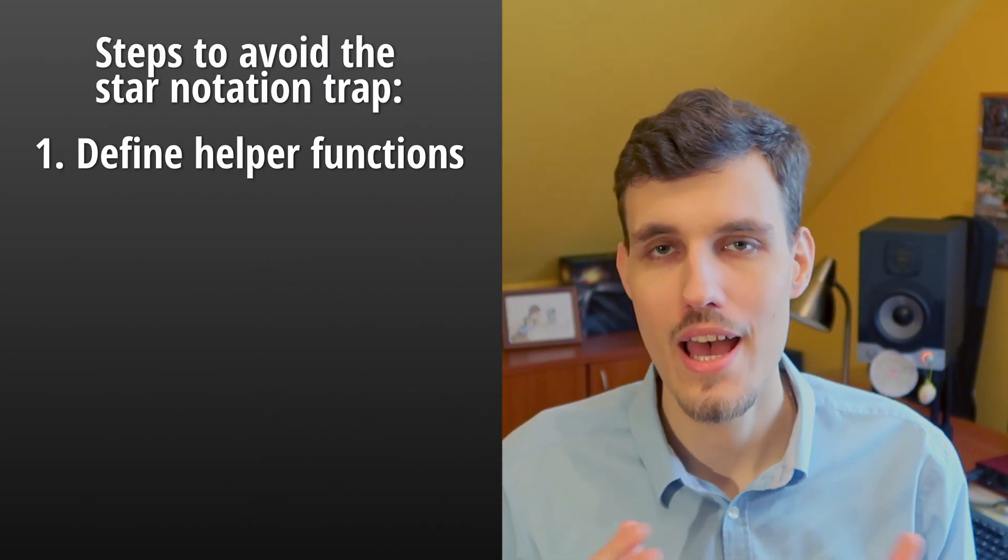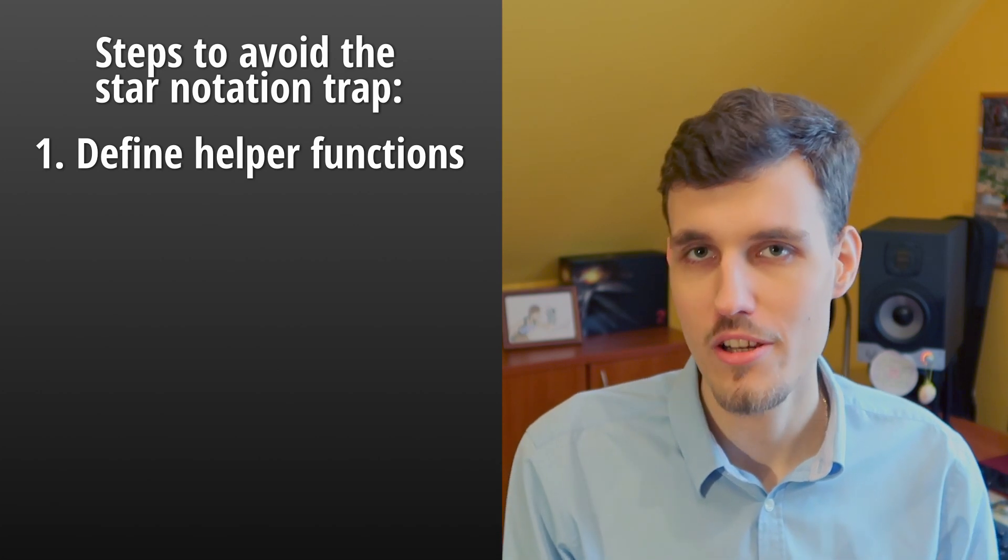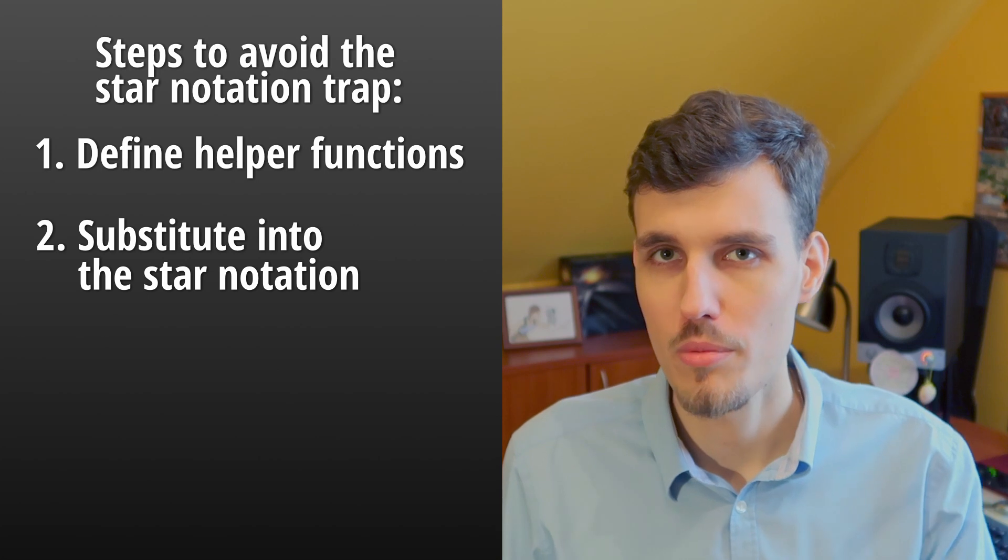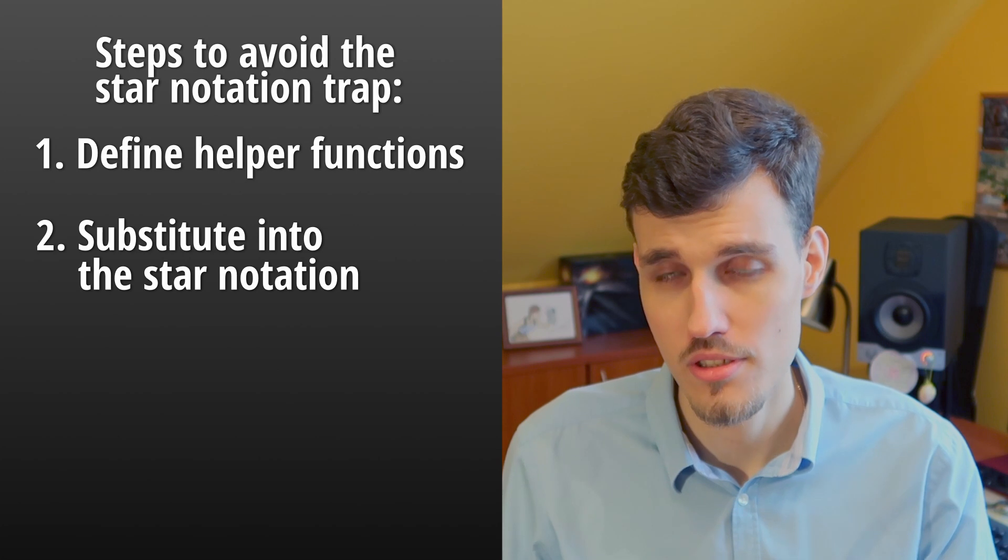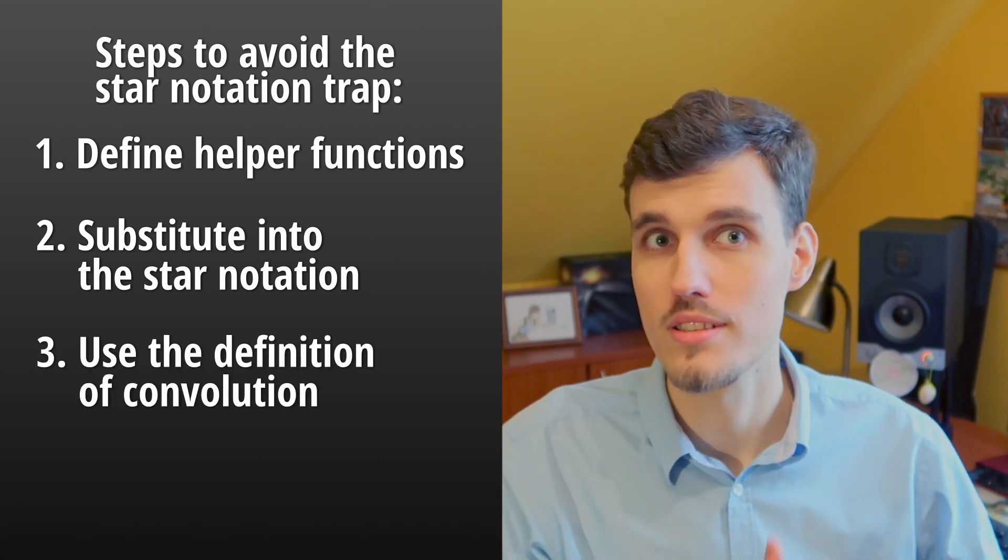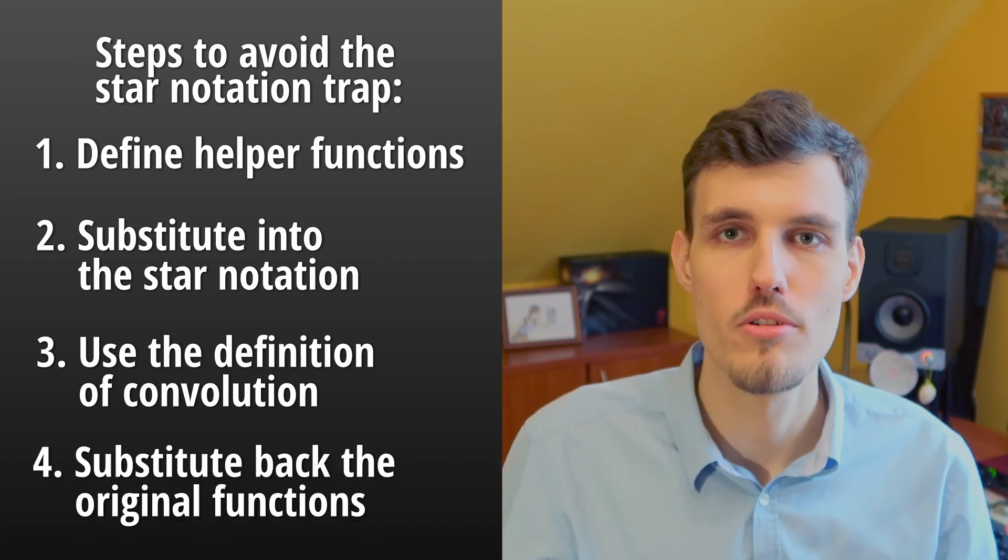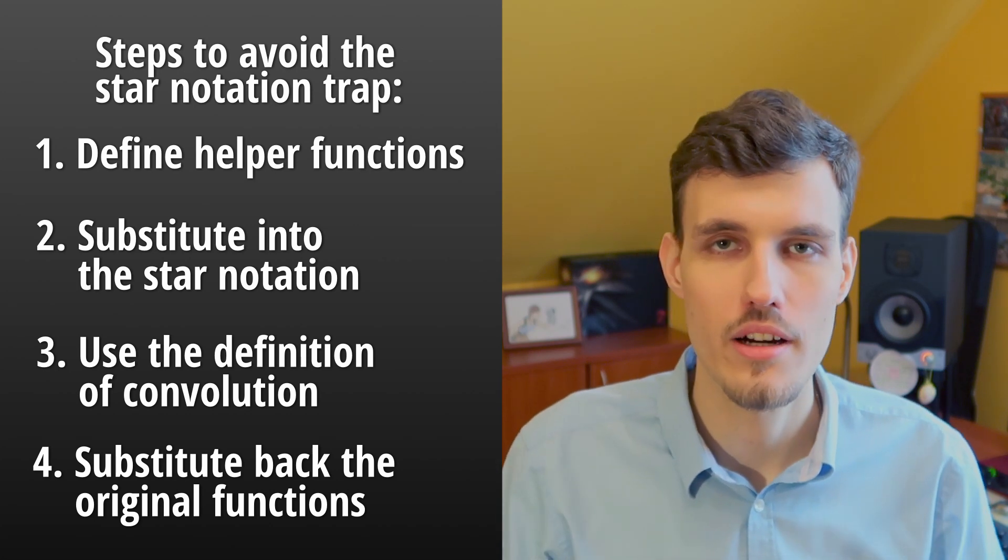Well, the way I go about it is to define helper functions. These are just temporary functions which I then substitute to obtain a simple form of the convolution with the star notation. Then I use the definition of convolution with these helper functions and finally substitute back the original functions with the newly obtained arguments.